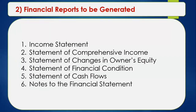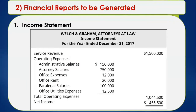Another content of the accounting manual is financial reports to be generated. There are six different financial statements: first, income statement; second, statement of comprehensive income; third, statement of changes in owner's equity; fourth, statement of financial condition; fifth, statement of cash flows; and lastly, notes to financial statements. The income statement is the statement that shows the results of operations, and there are only two results: the company makes a profit or the company incurs a loss.